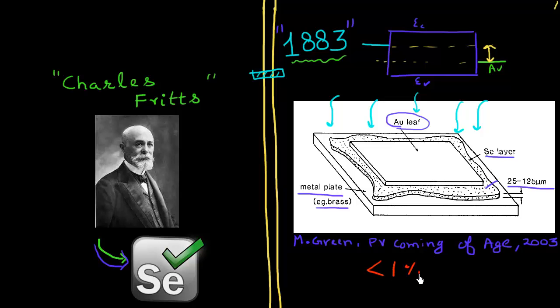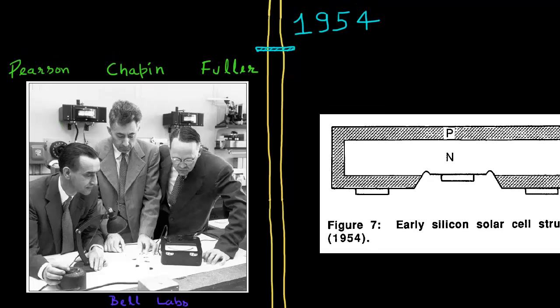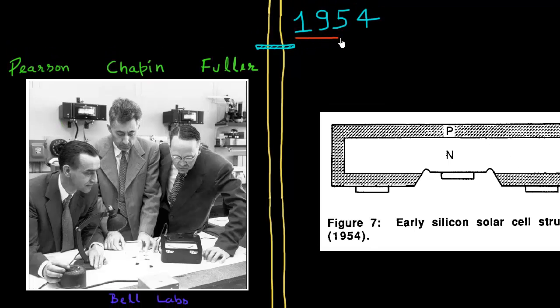So the next big breakthrough in terms of efficiency came around in 1954. And it's credited to this trio of these three people who used to work at Bell Labs. And shown here is Pearson, Chapin, and Fuller. And in fact, there's an interesting background story behind this. So Chapin was the original solar energy enthusiast. And he was pursuing this research of solar cells based on selenium.